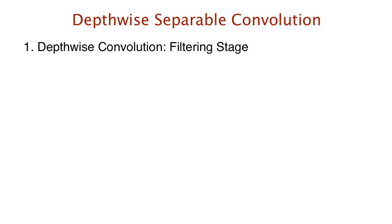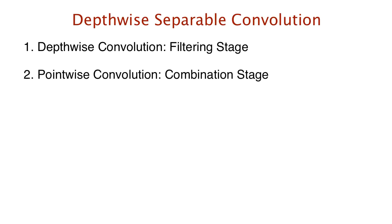Let's now take a look at depthwise separable convolutions. In standard convolution, the application of filters across all input channels and the combination of these values are done in a single step. Depthwise separable convolution, on the other hand, breaks this down into two parts: the first is depthwise convolution, which performs the filtering stage, and then pointwise convolution, which performs the combining stage.